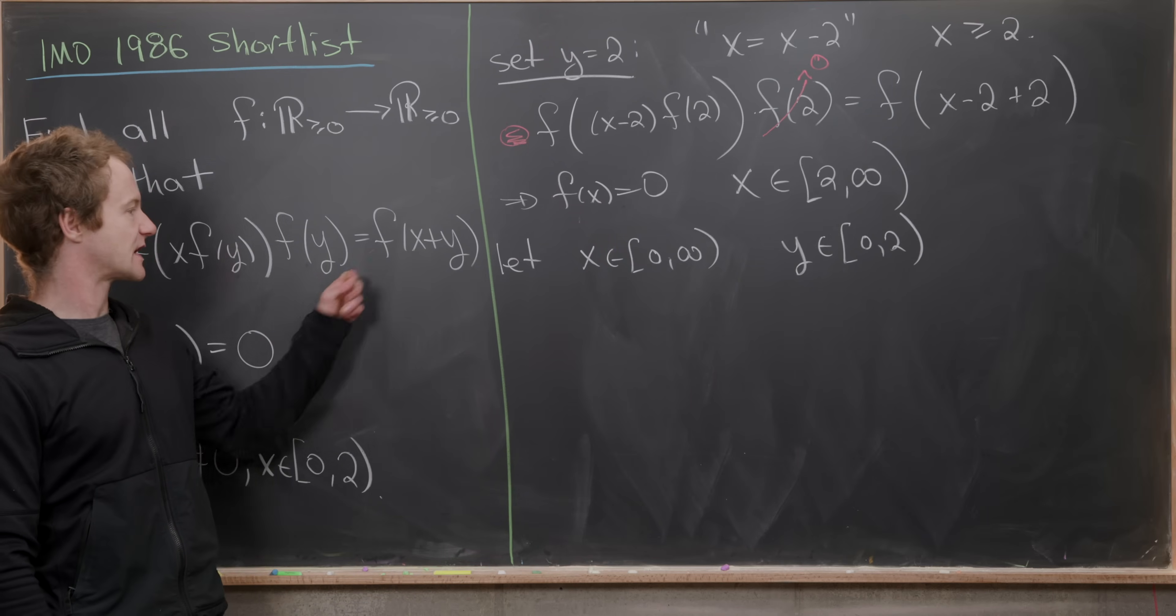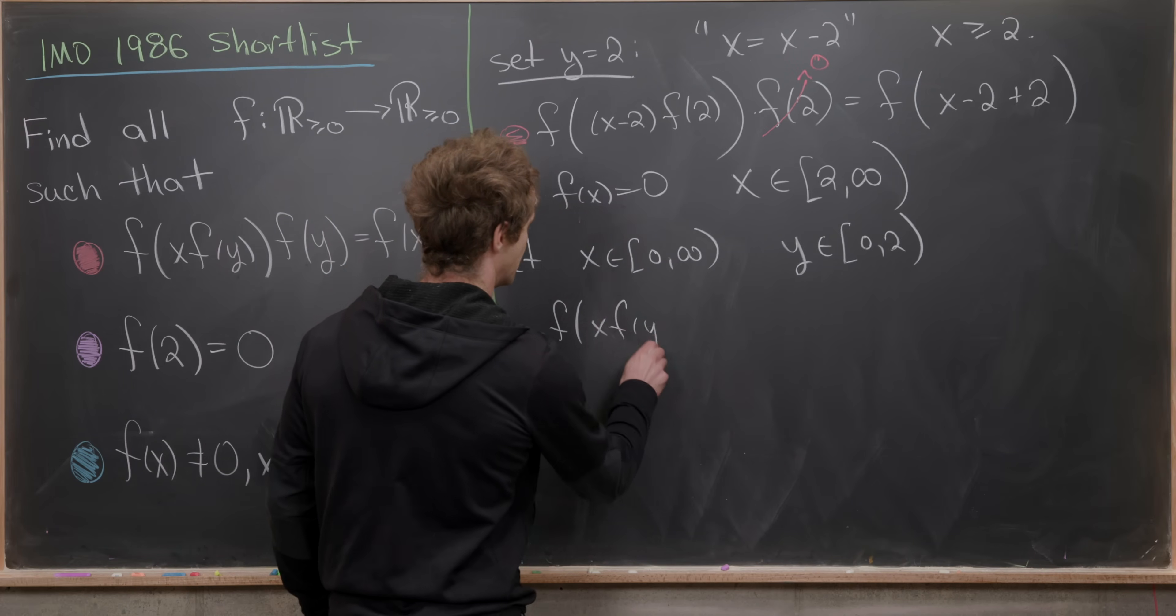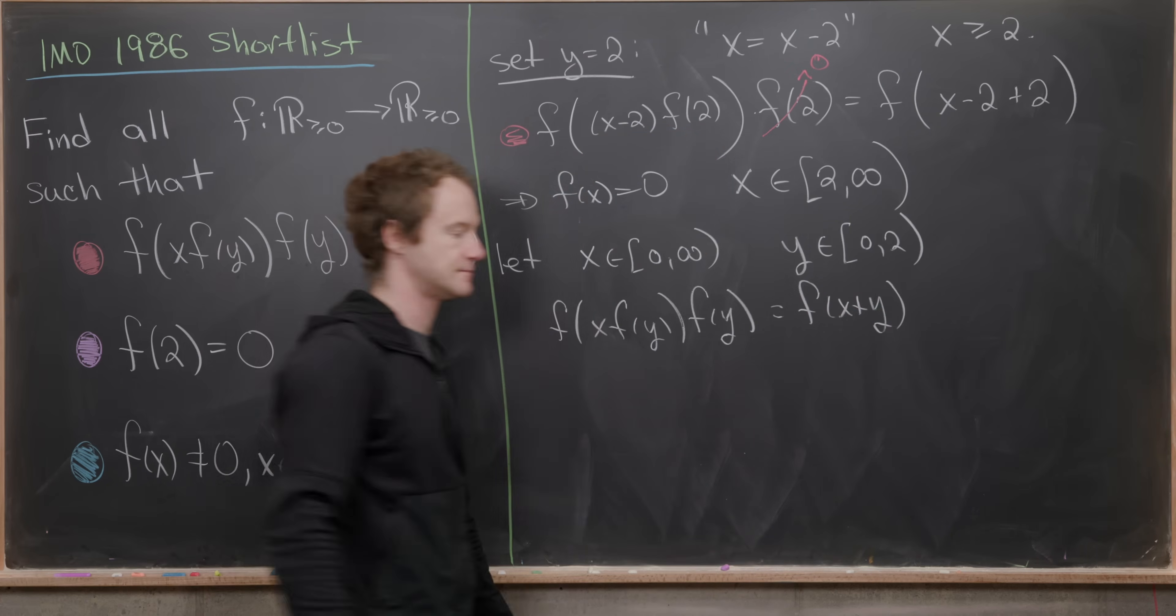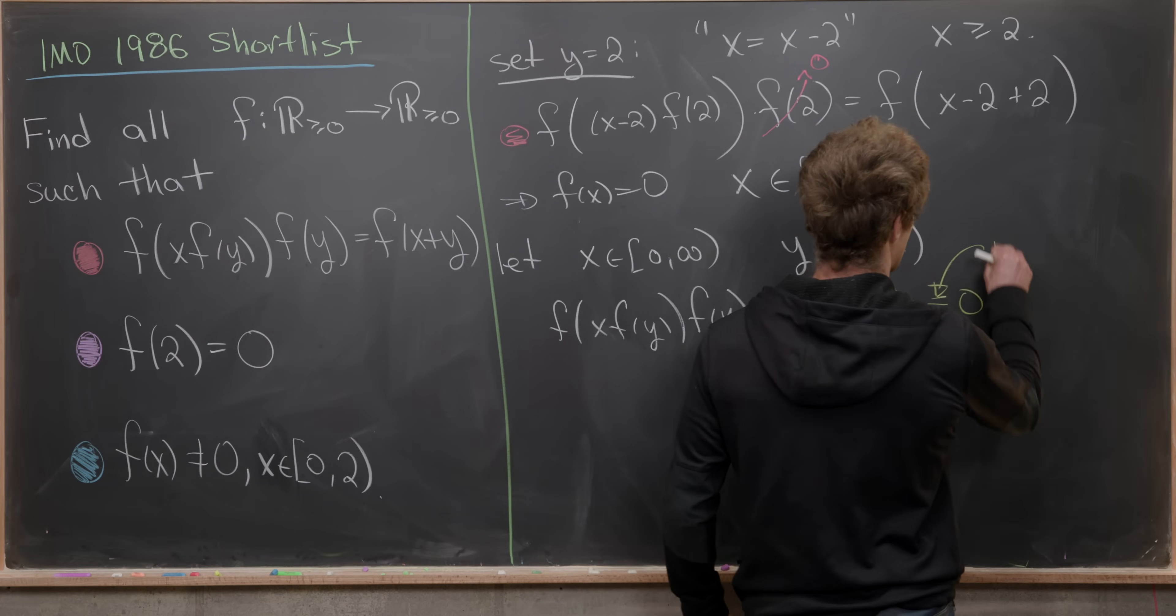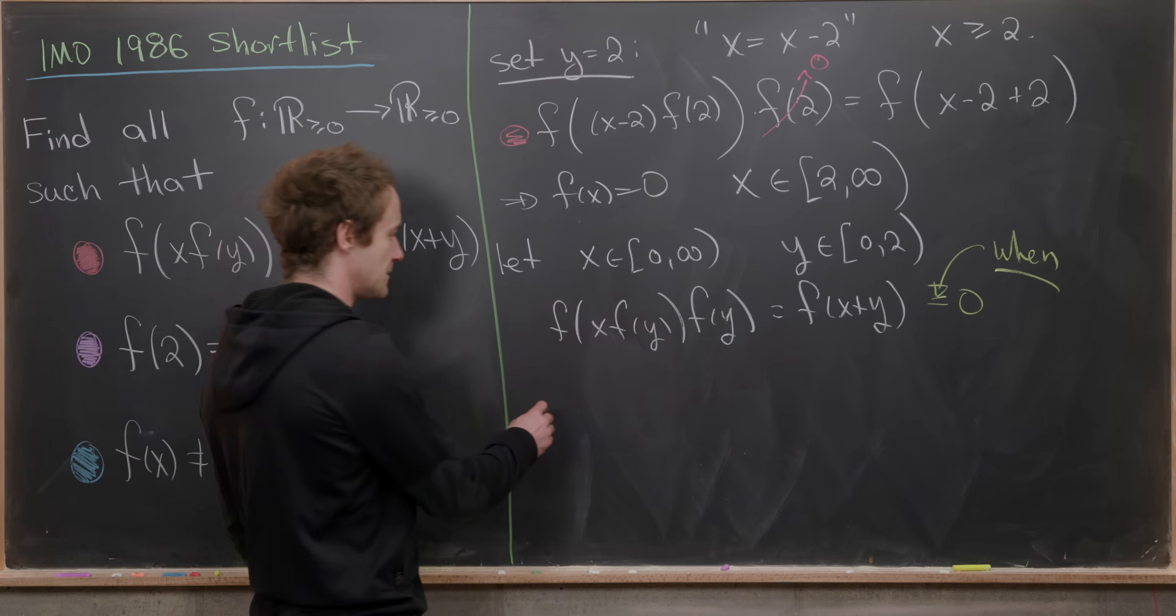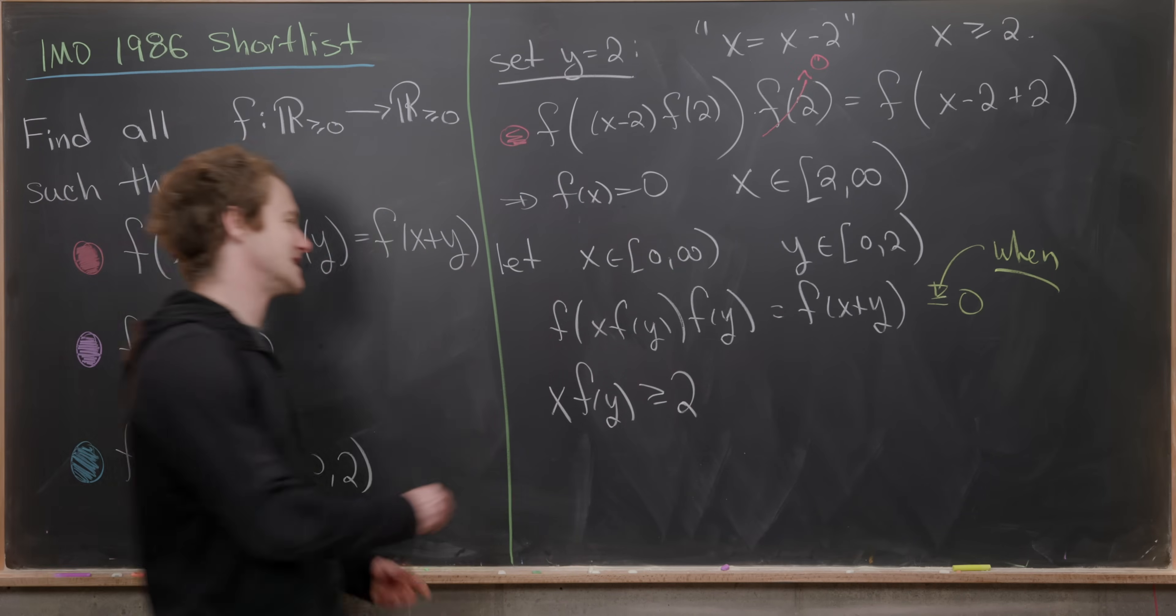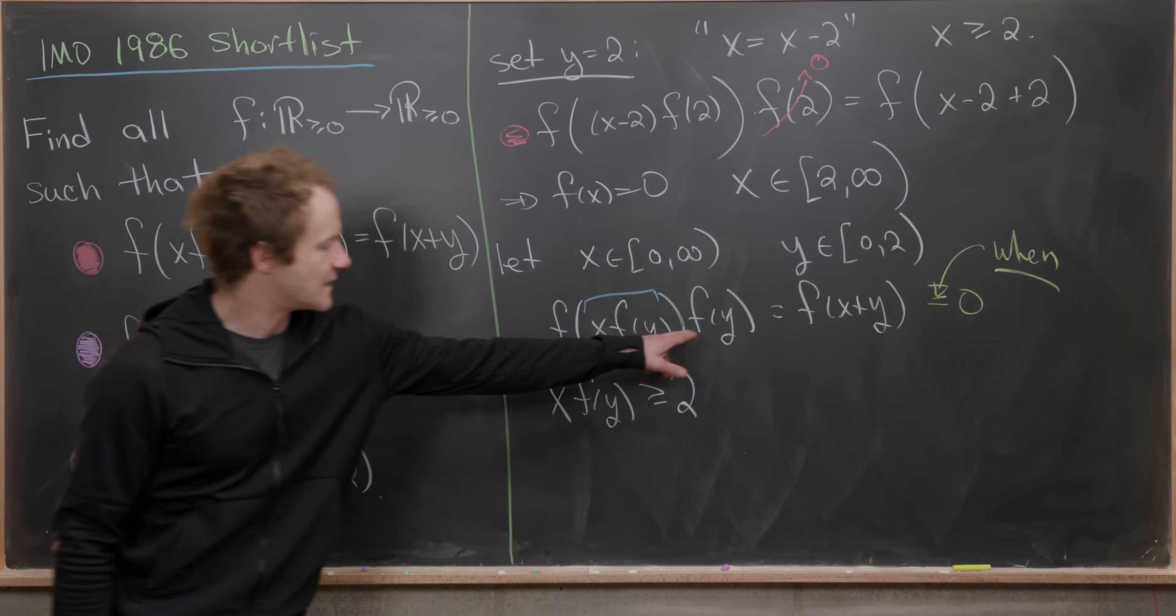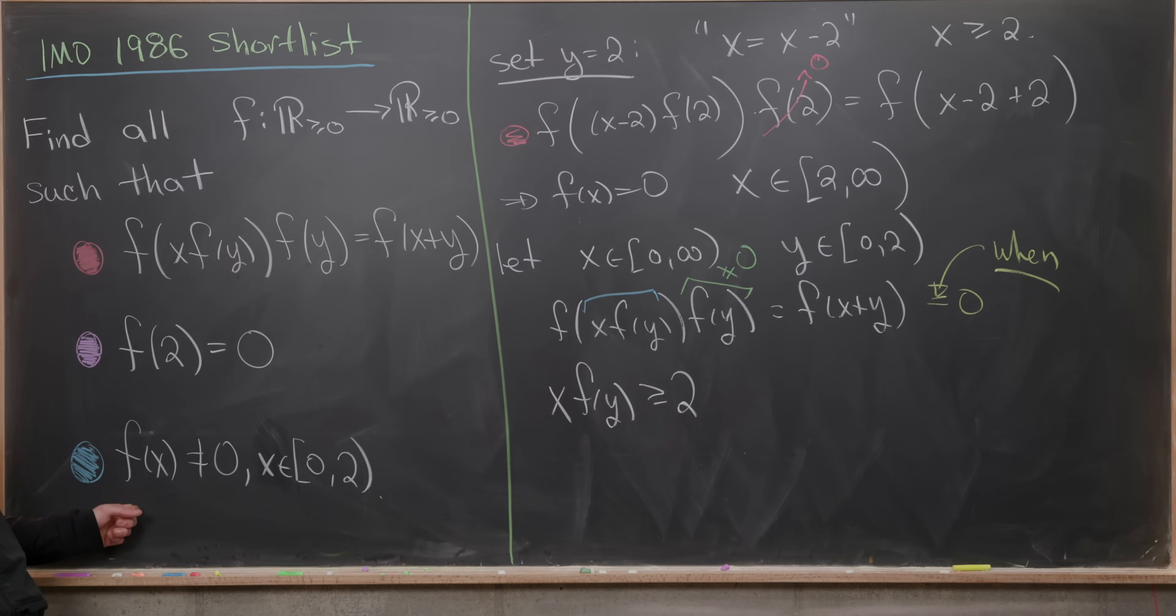Now let's just look at our functional equation in this case. Our functional equation is going to give us f(x)·f(y)·f(y) = f(x+y). Now we want to answer the question when is this equal to 0. So let's say that is exactly what we want to do here. Well, the left hand side is equal to 0 when x·f(y) ≥ 2, because that is the input of this function into the most outside part here. We know that this f(y) is not equal to 0 by our third blue condition. So this thing that I've overlined in blue has to satisfy this rule.